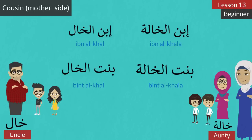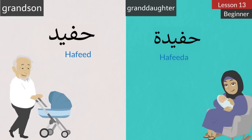The cousins from the mother's side. Ibn al-Khaal — son of uncle. Bint al-Khaal — daughter of uncle. Ibn al-Khaala — son of aunt. Bint al-Khaala — daughter of aunt. Let's repeat. Ibn al-Khaal, Bint al-Khaal, Ibn al-Khaala, Bint al-Khaala.